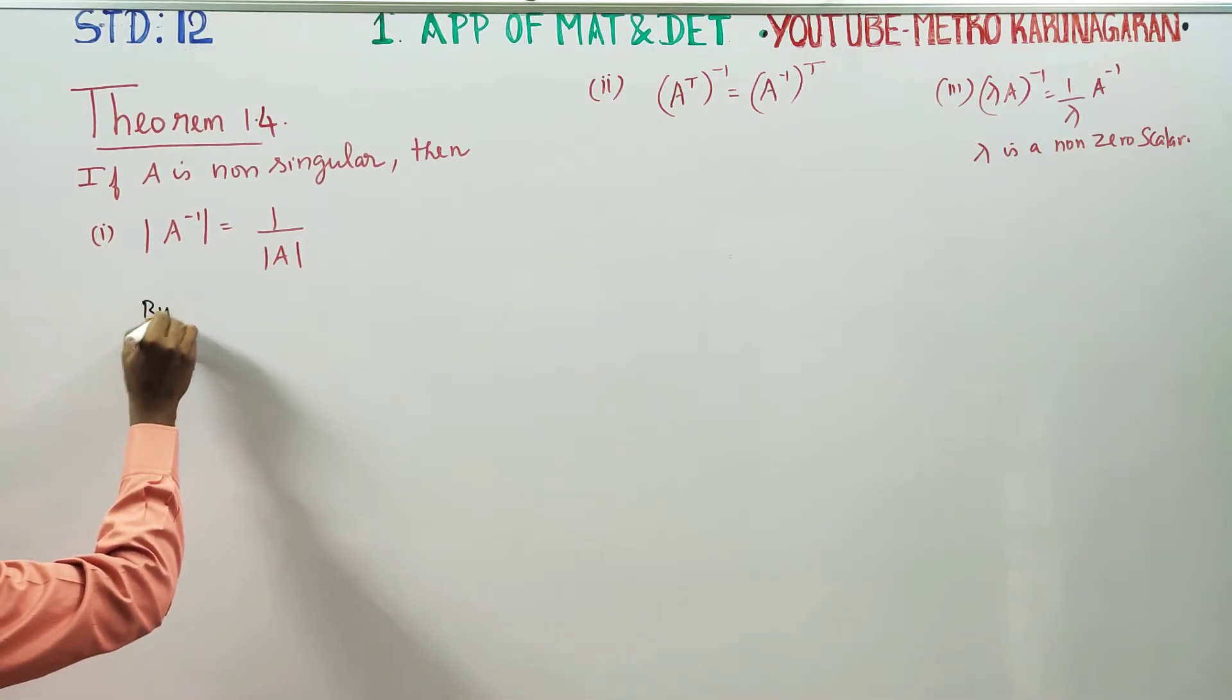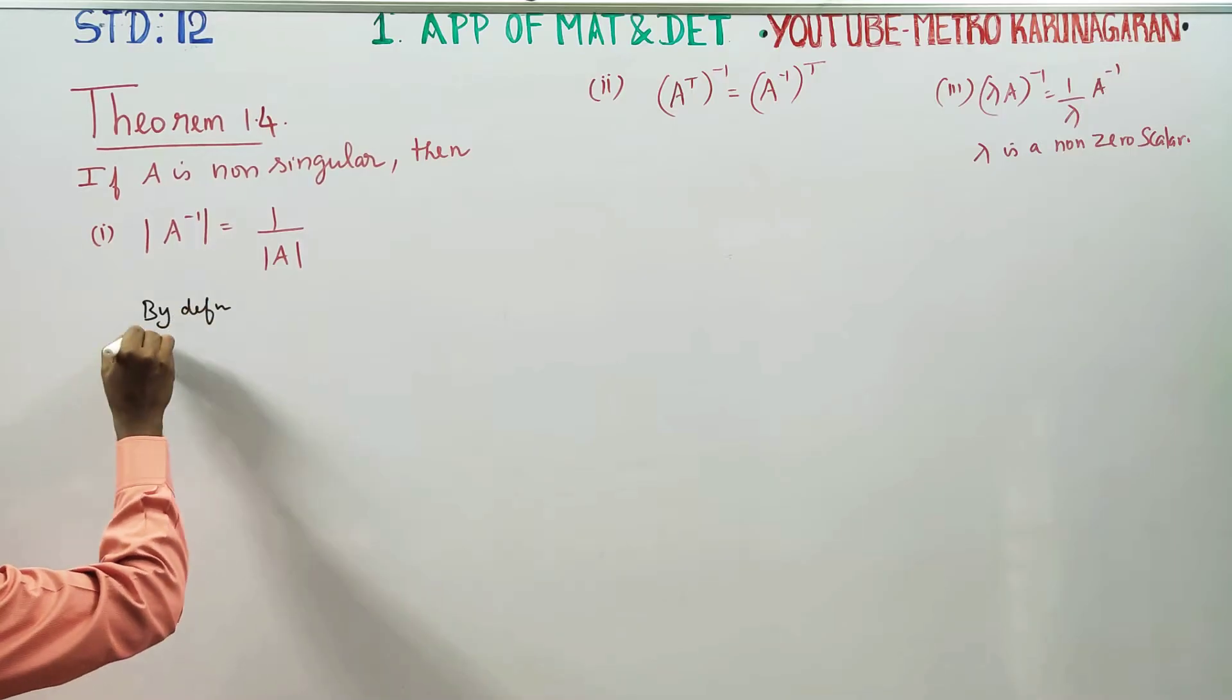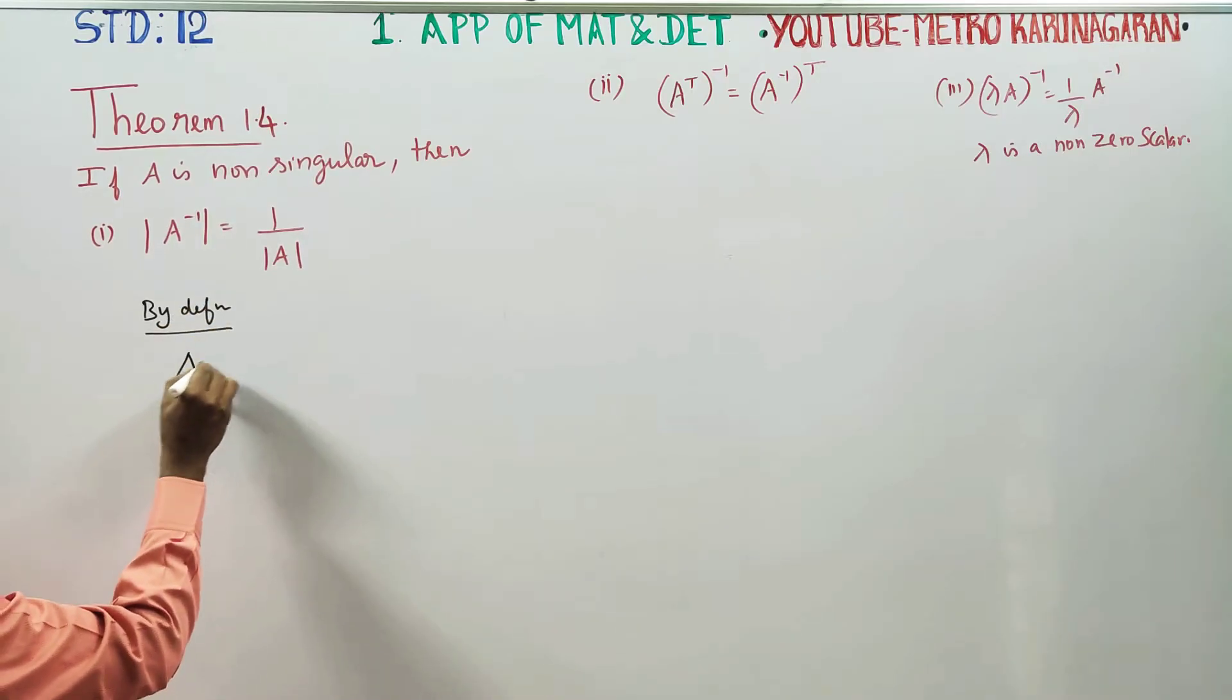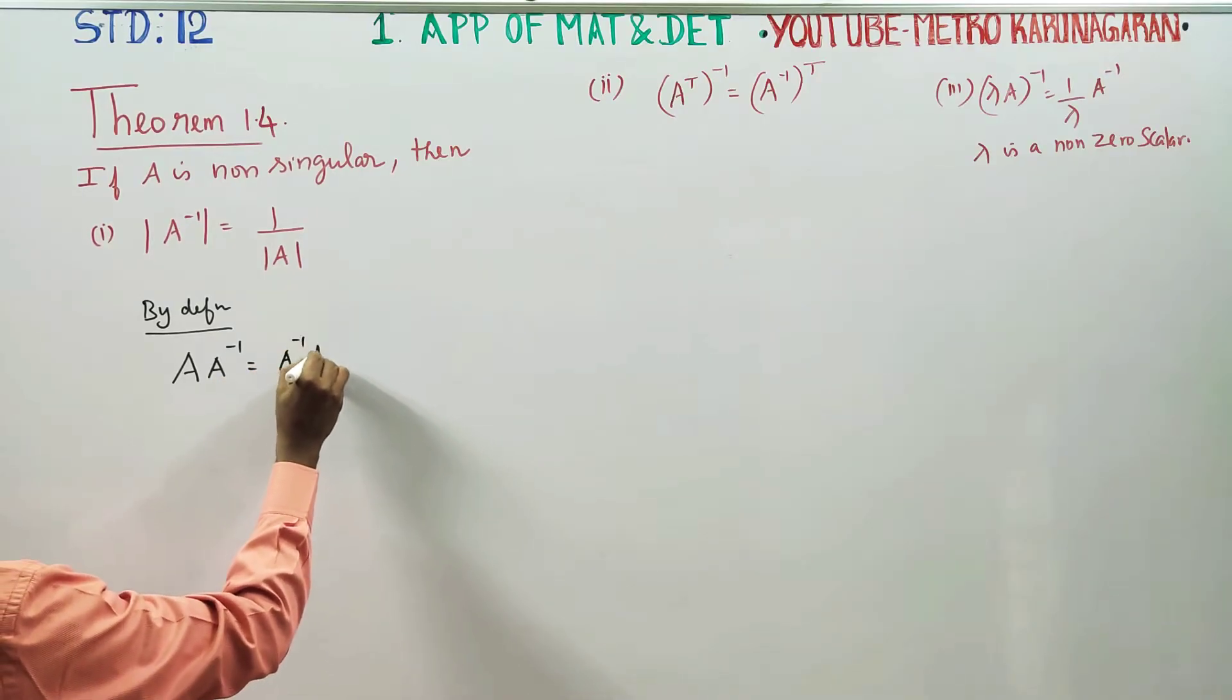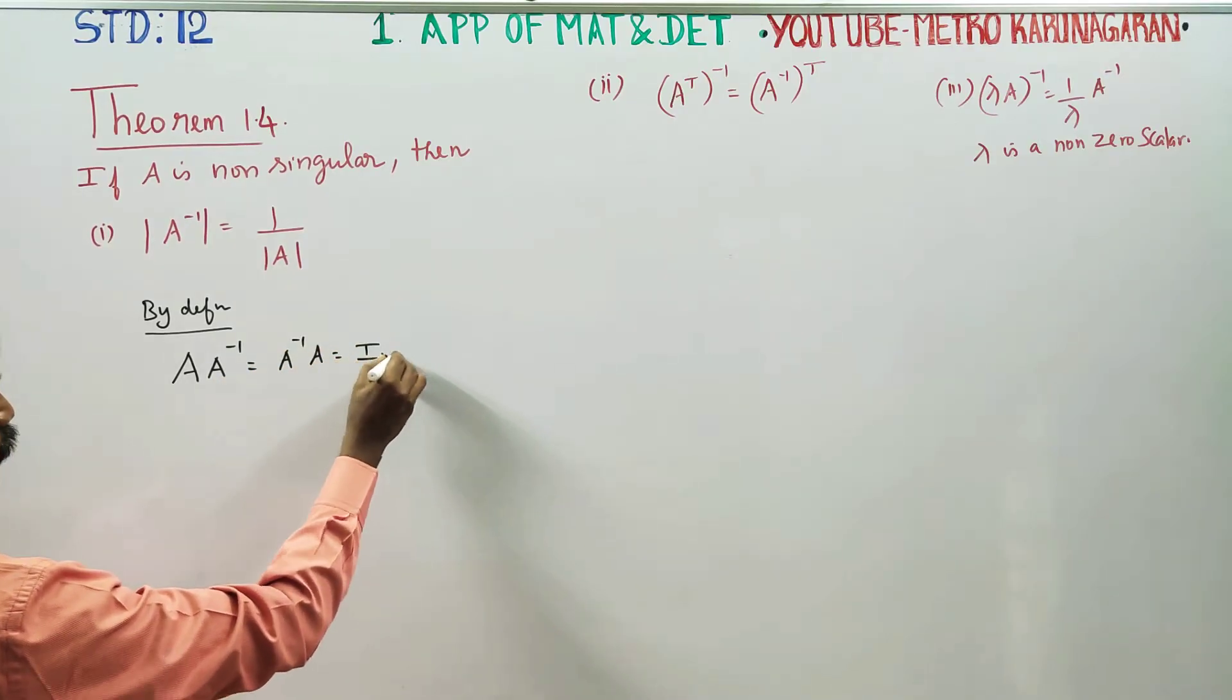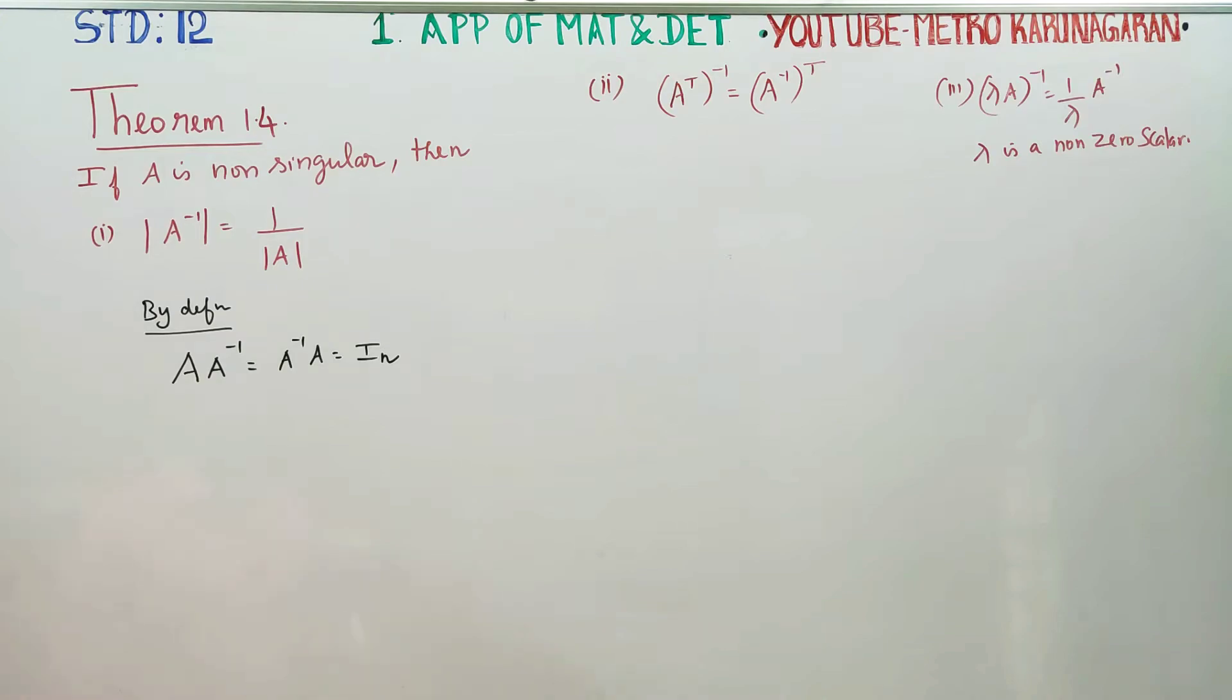By definition of inverse, we know that A times A inverse equals A inverse times A, which equals the unit matrix I_n. This is the definition of inverse.